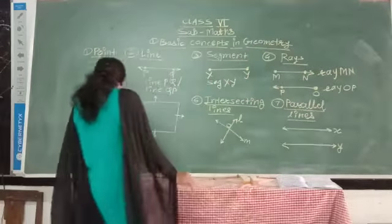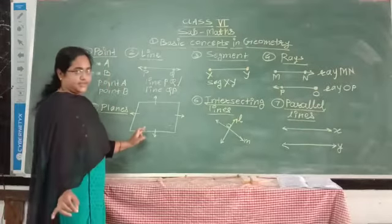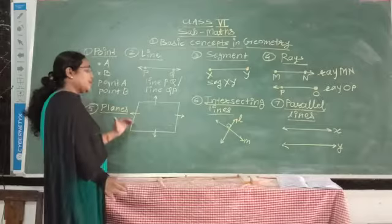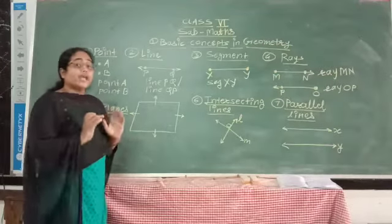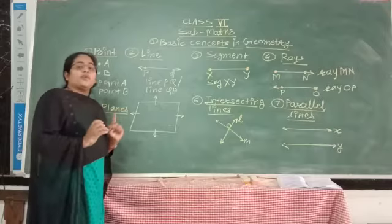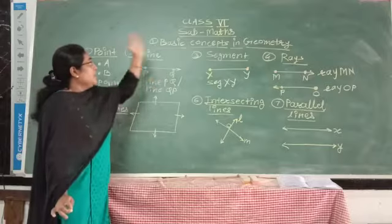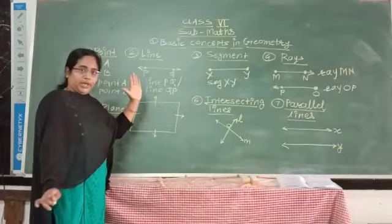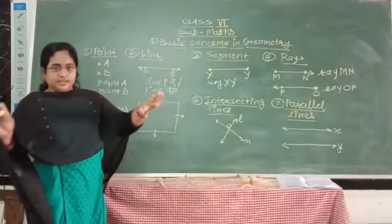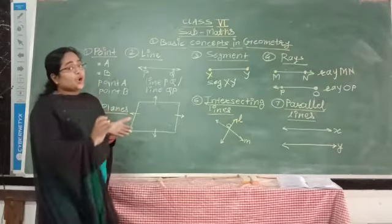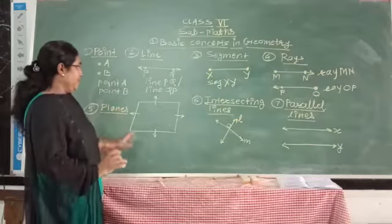The fifth basic concept in geometry is a plane. A plane is a flat surface. For example, the blackboard, the desk, and the page of our book or copy are all examples of a plane.